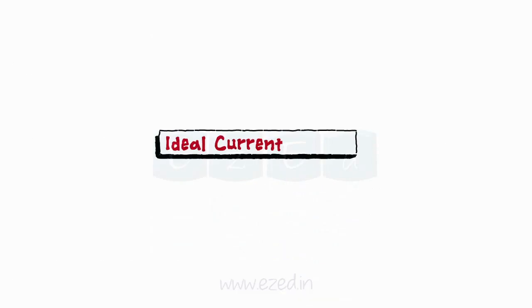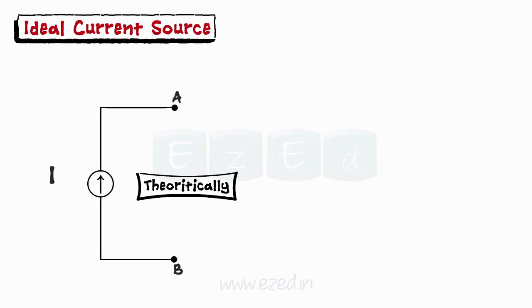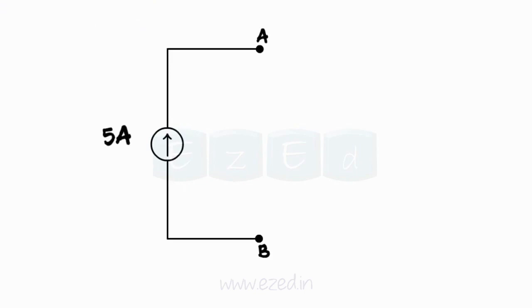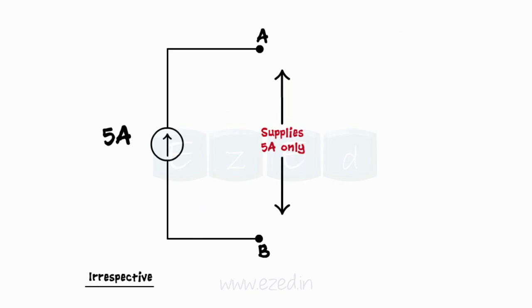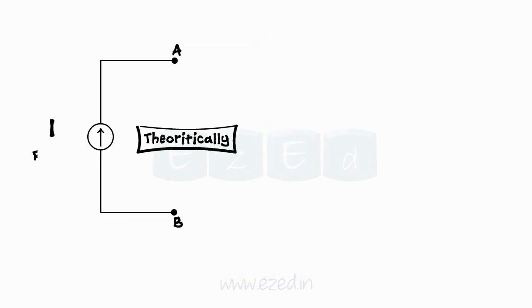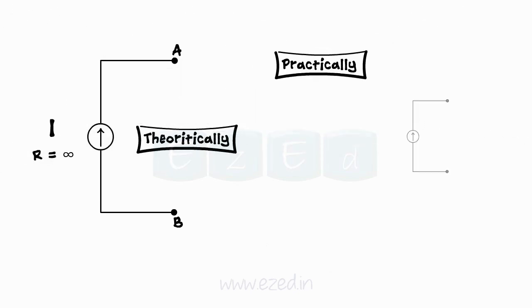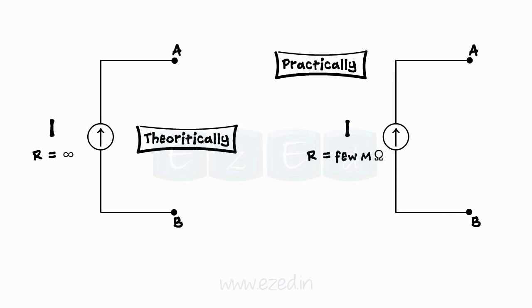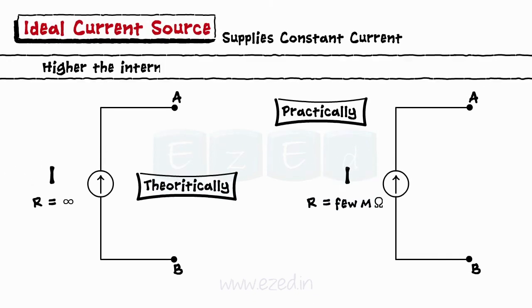Similarly, the current supplied by an ideal current source must remain constant irrespective of the load resistance or voltage applied. An ideal current source of 5 amperes always gives 5 amperes regardless of the resistor or voltage source. The internal resistance of the ideal current source is infinite, but practically we get a large resistance instead. Thus, the higher the internal resistance, the more ideal the current source.